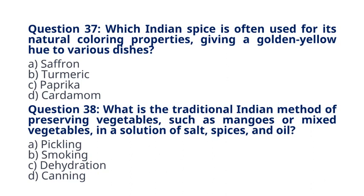Question 38. What is the traditional Indian method of preserving vegetables, such as mangoes or mixed vegetables, in a solution of salt, spices, and oil? A. Pickling. B. Smoking. C. Dehydration. D. Canning. The correct answer to question 38 is option A. Pickling. Explanation. Pickling, or achar, is a popular method in India for preserving vegetables using a mixture of salt, spices, and oil.